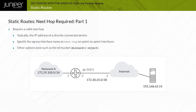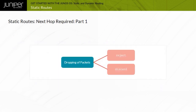Another possibility is that the Next Hop value is the bit bucket — a phrase analogous to dropping the packet off the network. Within Junos OS, the dropping of packets is represented with the keywords reject or discard. Both options drop the packet from the network; the difference is in the action the device running Junos OS takes after the drop.